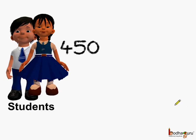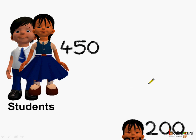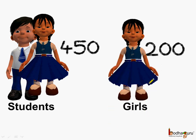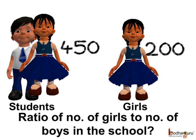In a school, there are 450 students. This includes both the girls and the boys. The number of girls are 200, which means the remaining are boys. Now let us find what is the ratio of girls to the number of boys.